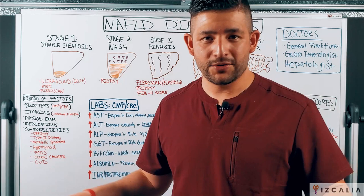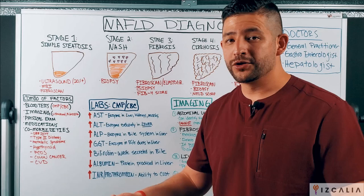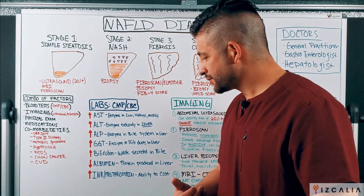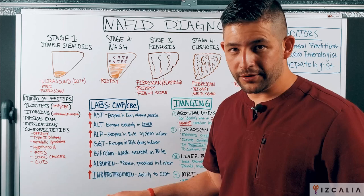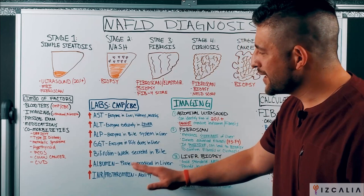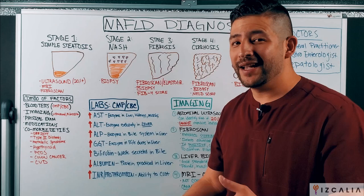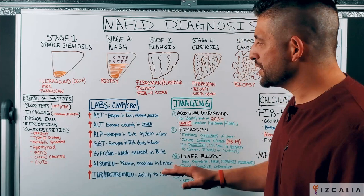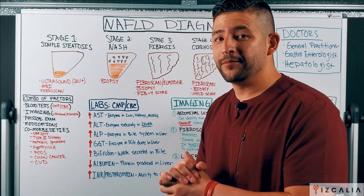Last but not least, we have INR and prothrombin levels, which are usually elevated. These are clotting factors that allow your body to clot, and they're usually elevated in the presence of liver disease, especially NAFLD. When it comes to diagnosis, you don't just take one factor and say you have liver dysfunction — you have to take into account the entire picture, because a lot of these enzyme levels and proteins can indicate other dysfunctions as well. It's a piece of the puzzle, important for you to understand when reading your lab results.